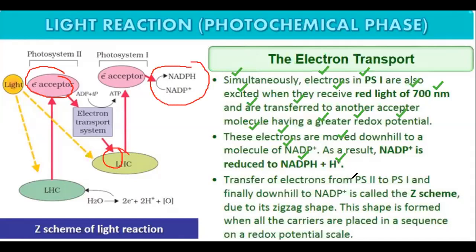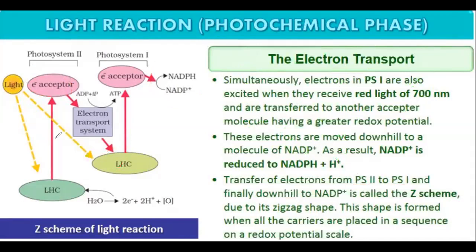The transfer of electrons from PS2 to PS1 and finally downhill to NADP is called the Z scheme. The Z scheme is called the Z scheme because it is Z-shaped. Light falls on the light harvesting complex, and when the light falls on the light harvesting complex, it energizes the electrons.